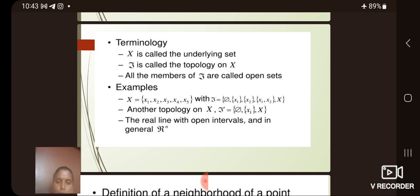For example, if x equals {x1, x2, ..., x5}, then tau could equal {phi, x1, x2, ...}. Another topology on x: tau equals {phi, x1, x}. The real line with open intervals, and in general R^n.